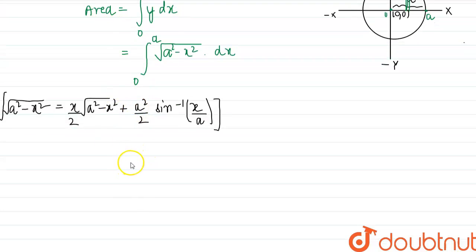So this will become [(x/2)√(a² - x²) + (a²/2)sin⁻¹(x/a)] and the limits will be from 0 to a.